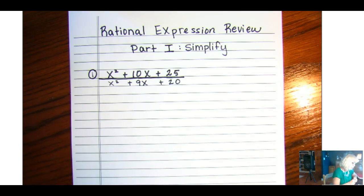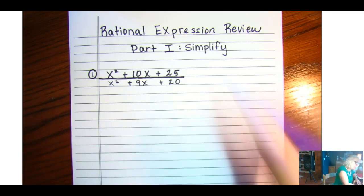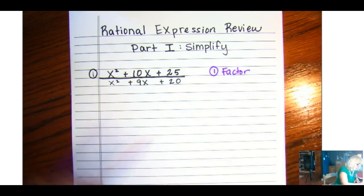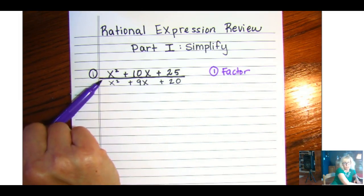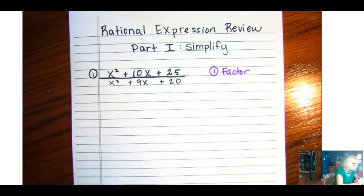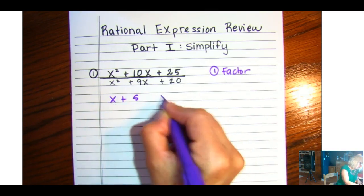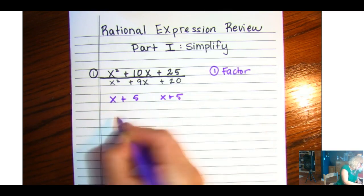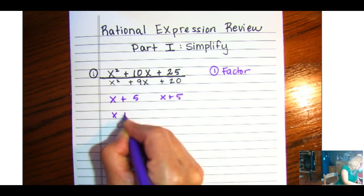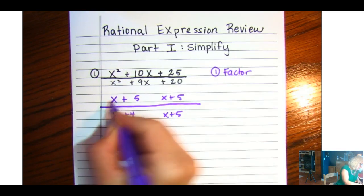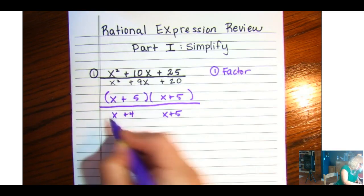Rational Expressions Review Part 1. Please take notes with me on your own notebook paper and follow along. And I am going to do those exact steps that we talked about. So the first thing is to always factor. So I really hope that you guys recognize that the numerator was a perfect square trinomial. So we are going to just go ahead and factor the numerator, which is two of these, and the denominator is going to be x plus 4 and then x plus 5.